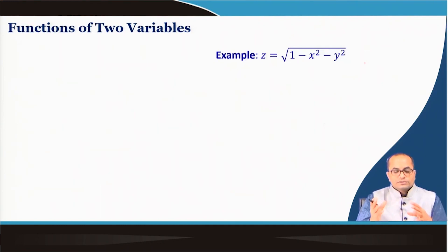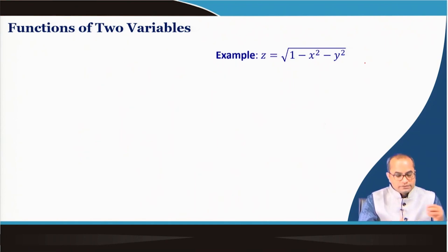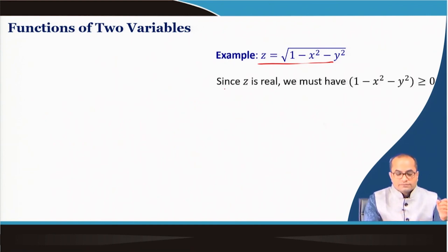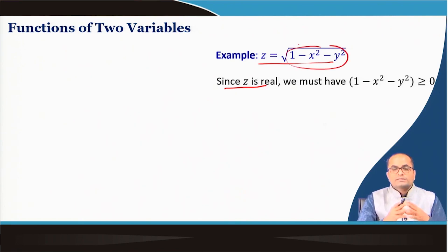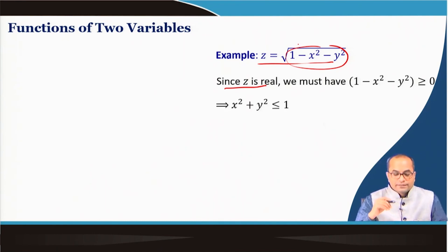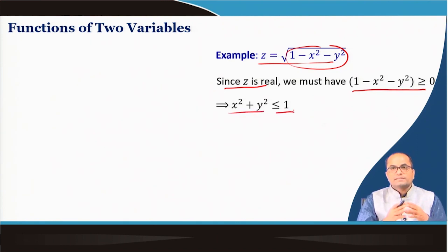We need some preparation for defining the limits of functions of two variables. As an example, take z = sqrt(1 − x² − y²). Since we are talking about real-valued functions only, we must have 1 − x² − y² non-negative. So we are looking for all possible values of x and y for which this function can be defined: 1 − x² − y² must be greater than or equal to 0, otherwise the function will not be defined.